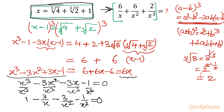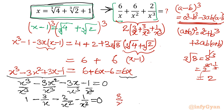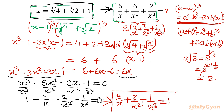From the equation 1 − 3/x − 3/x² − 1/x³ = 0, we need 6/x + 6/x² + 2/x³. This is exactly 2 times (3/x + 3/x² + 1/x³). From our equation, 3/x + 3/x² + 1/x³ = 1. So our answer is 2 × 1 = 2.